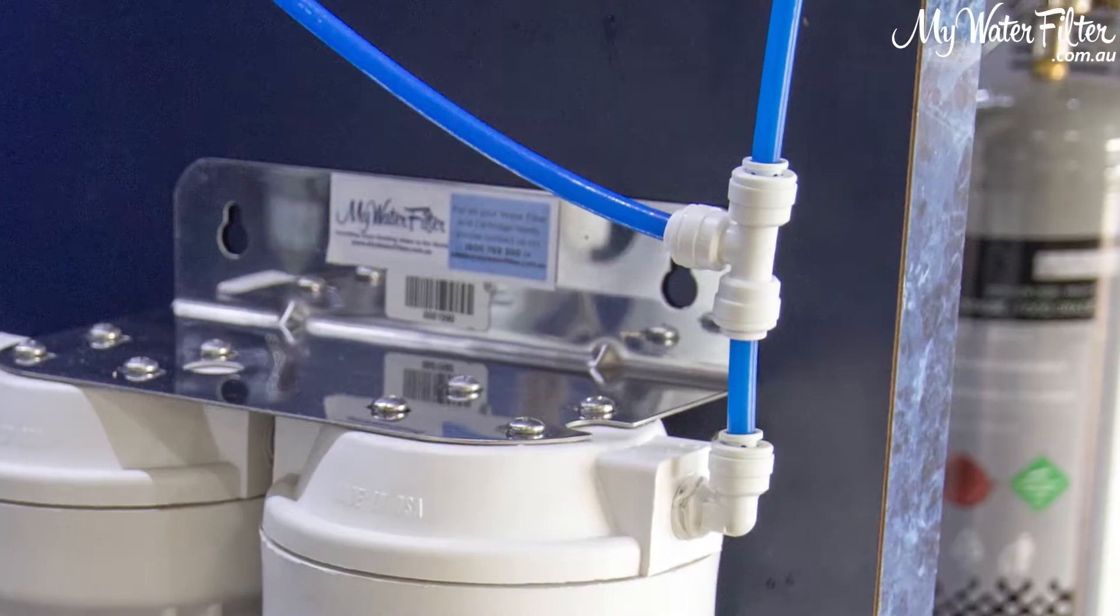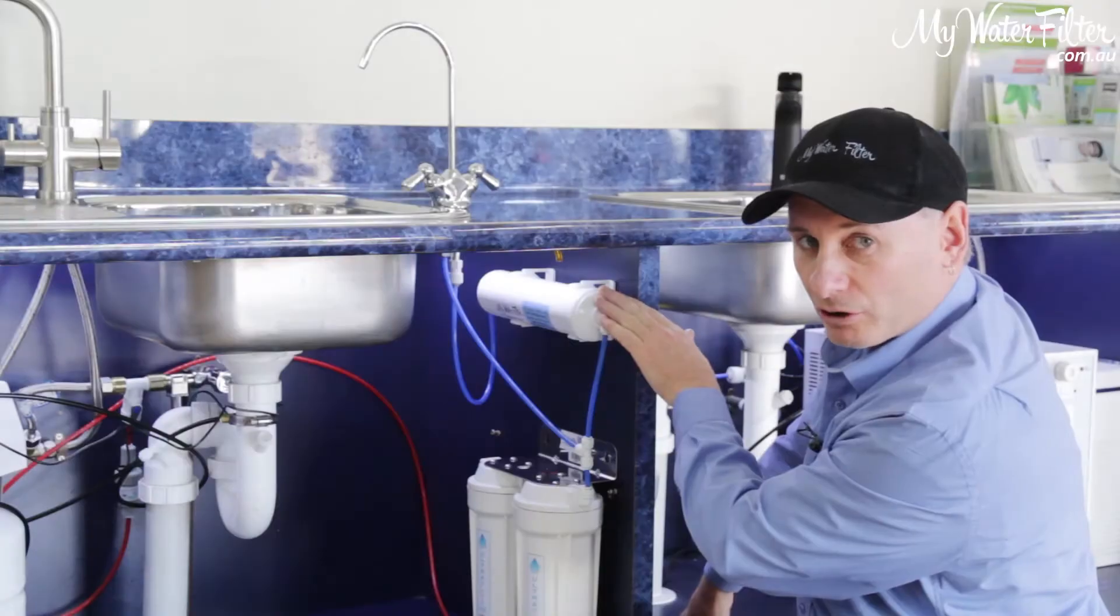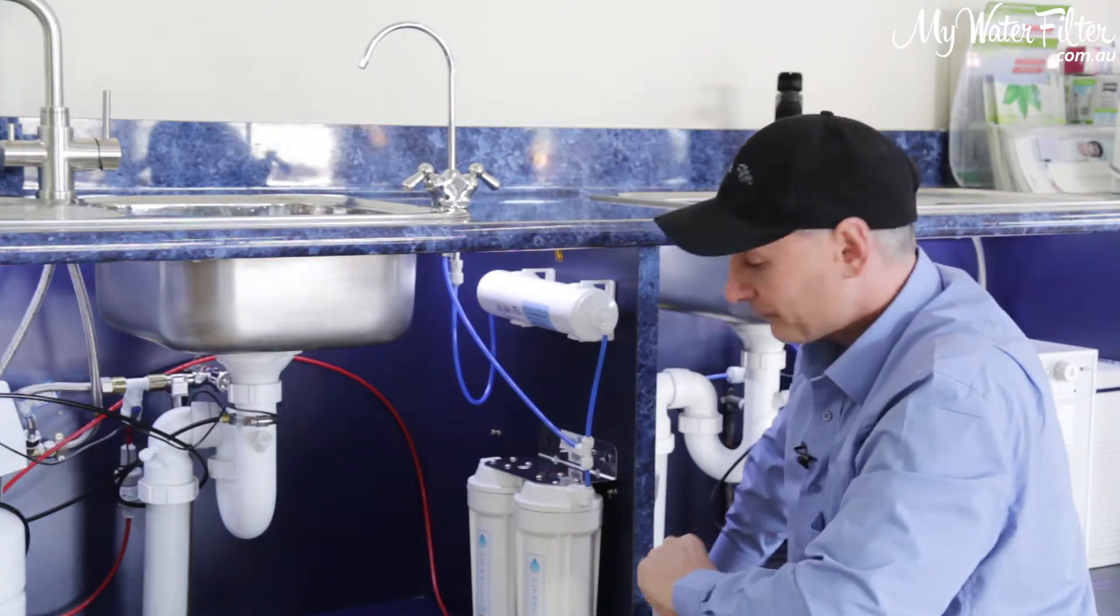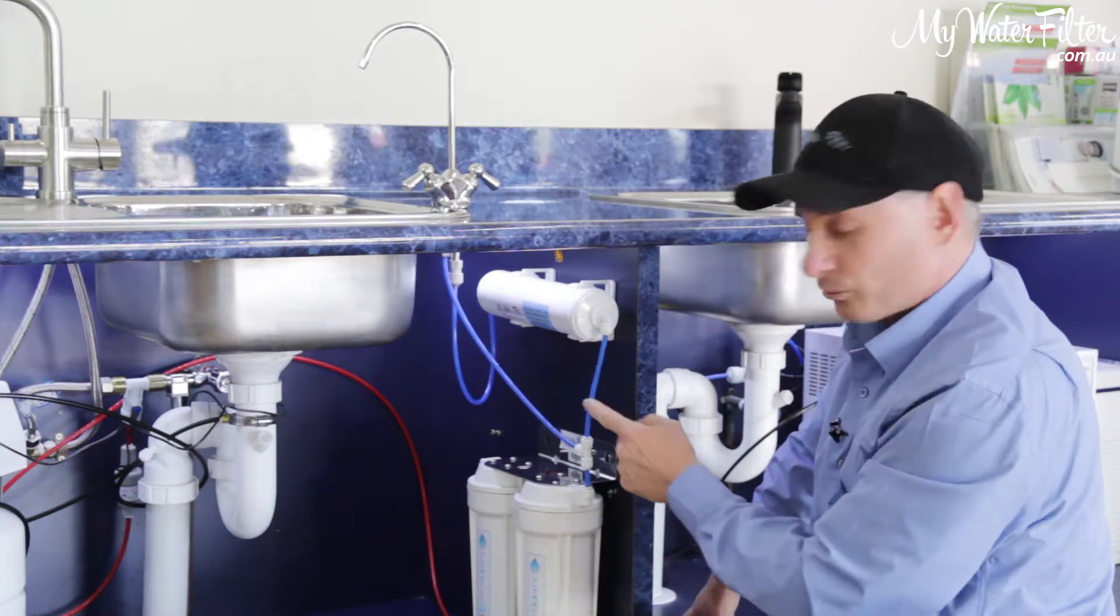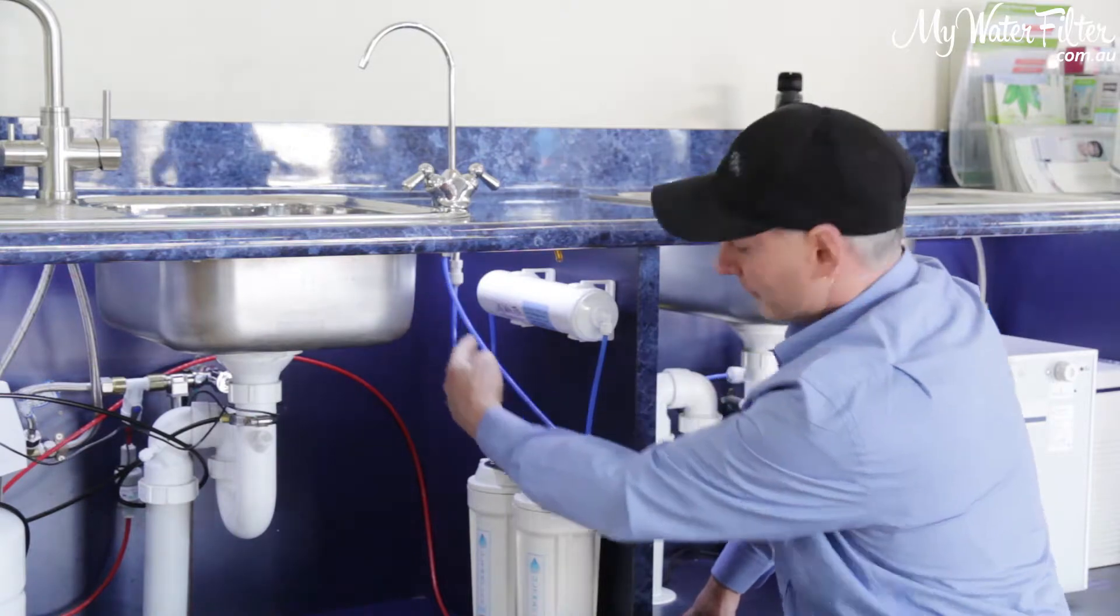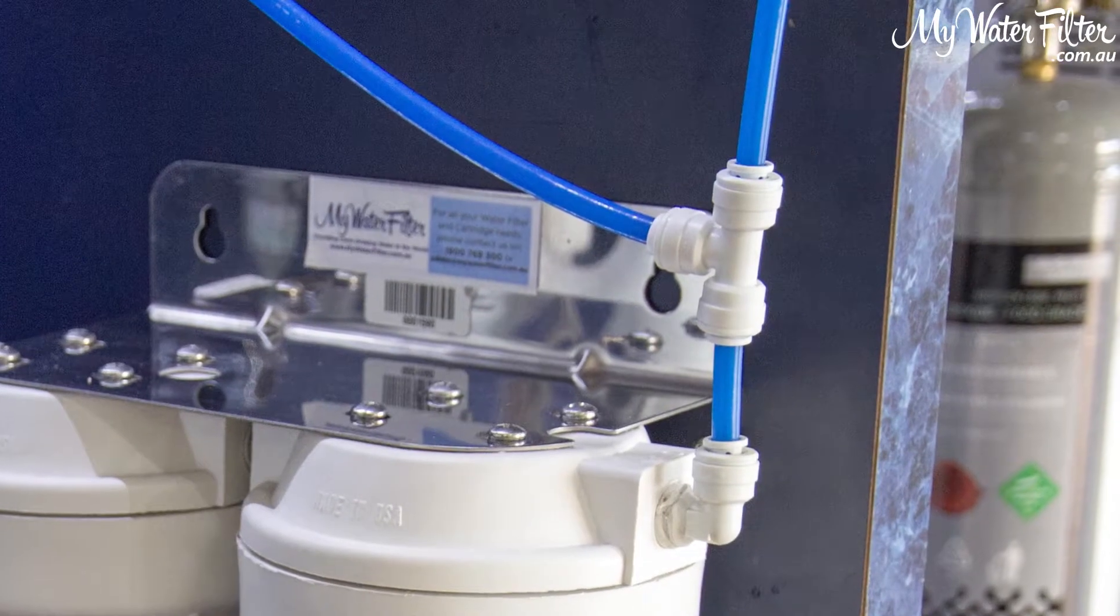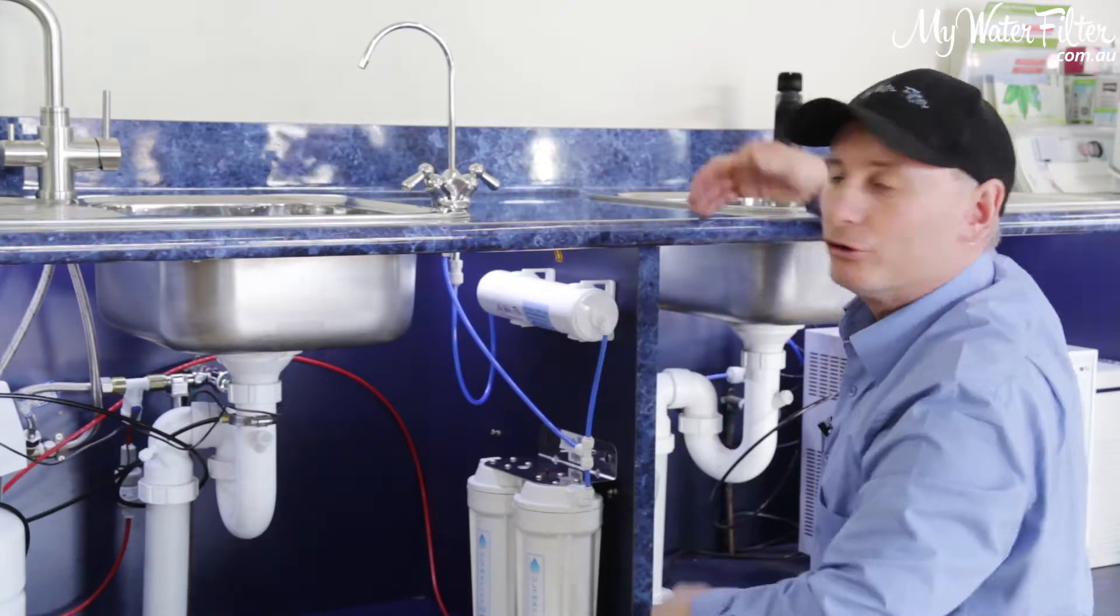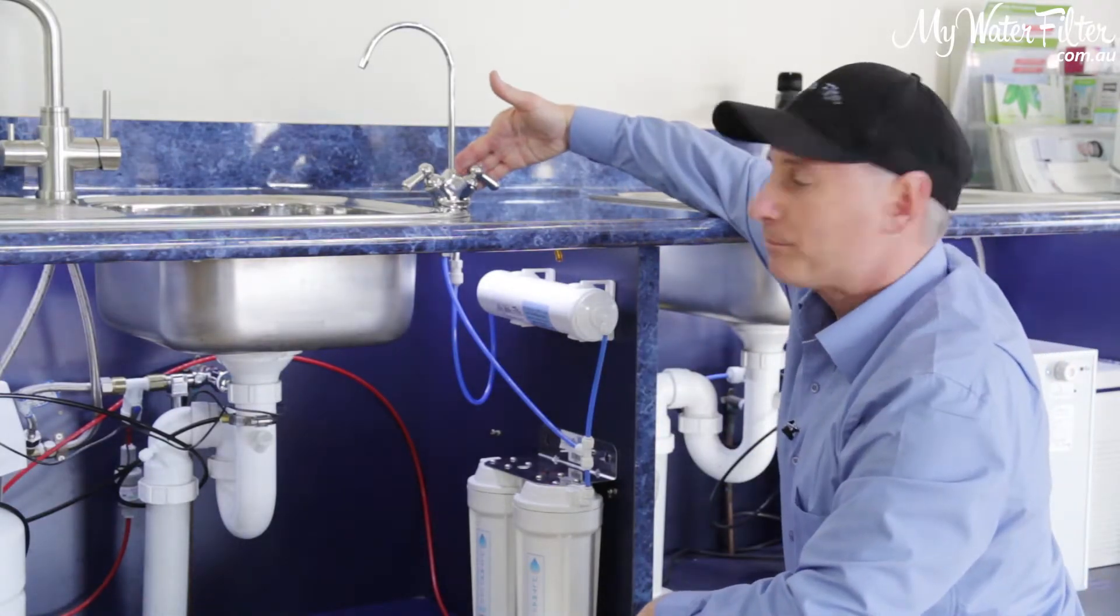So basically, in the kit there'll be the T-piece and the new alkalizer cartridges and the pipes and the connections that you require. And basically, where the water comes out of the water filter here, it just used to run straight up to the tap. So all we've done, we've installed a nice, neat little T-piece here, we're running the water through the alkalizer, and we've got two lines running up to this tap here now.